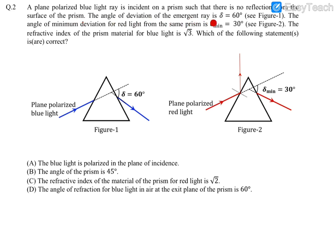The angle of deviation of the emergent ray is 60 degrees in figure 1. This is a blue colored plane polarized light such that the entire light is transmitted — there is no reflection taking place, so this is a critical point. The angle of minimum deviation for red light from the same prism is 30 degrees in figure 2. For red light there is both reflection and transmission through the prism. Note that figure 1 has general deviation and figure 2 has minimum deviation — we must deal with these separately.